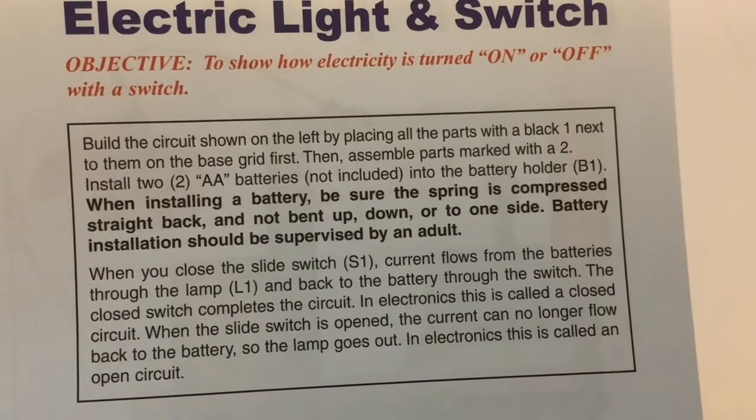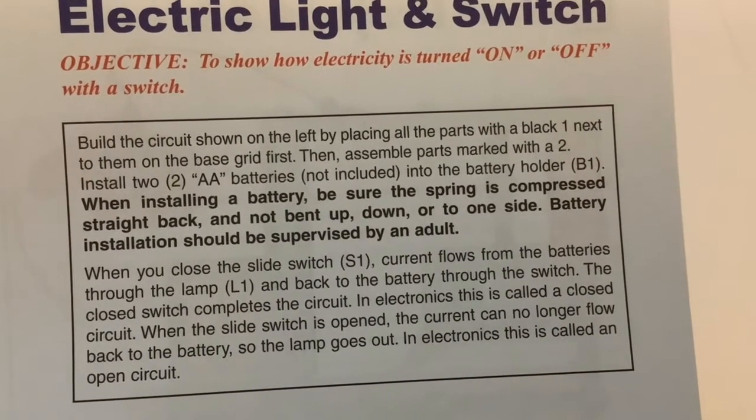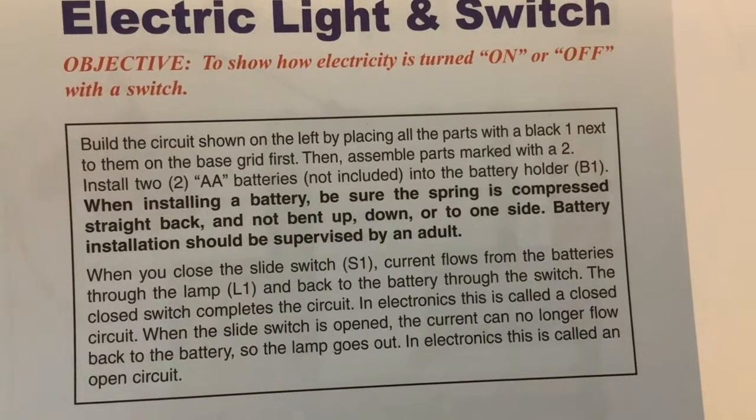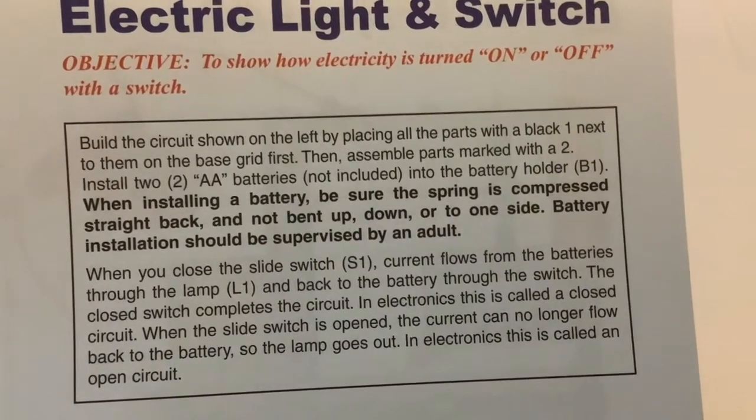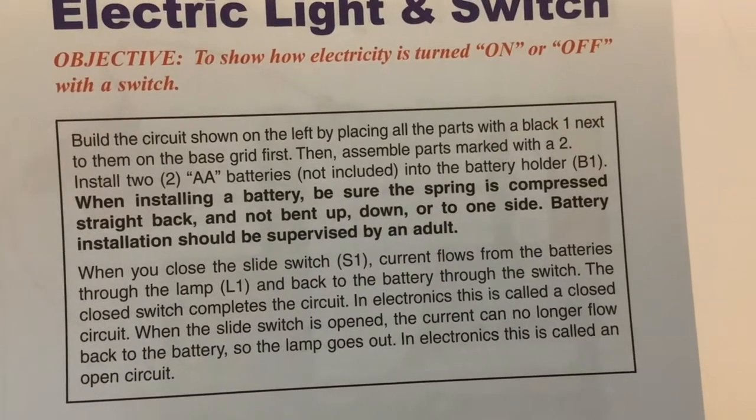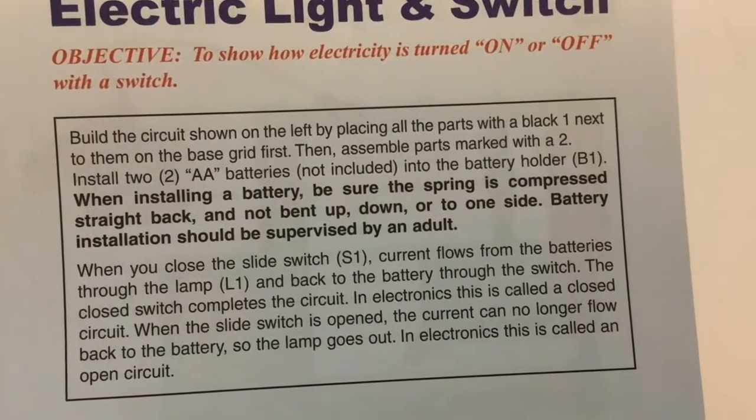When you close the slide switch, current flows from the batteries through the lamp and back to the battery through the switch. The closed switch completes a circuit. In electronics this is called a closed circuit. When the slide switch is opened, the current can no longer flow back to the battery, so the lamp goes out. In electronics this is called an open circuit.